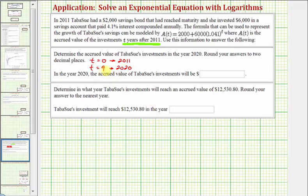Now that we know T equals nine represents the year 2020, to find the accrued value, we want to determine A of nine. So we substitute nine for T, so we'd have 2,000 plus 6,000 times 1.041 raised to the power of nine. And now we'll go to the calculator to approximate this value to two decimal places.